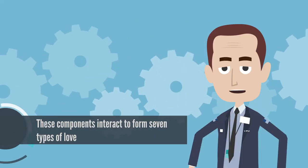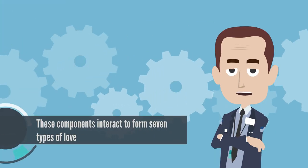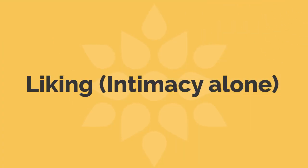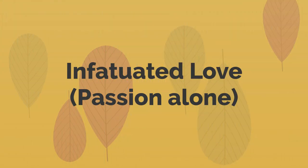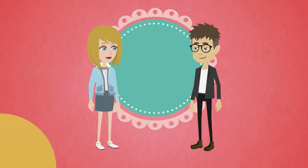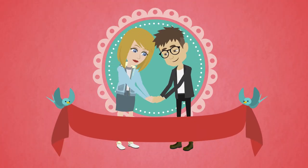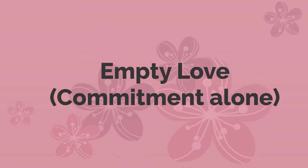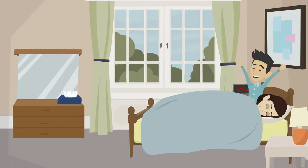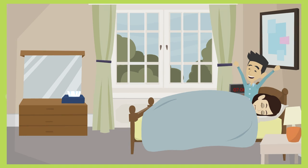These components interact to form seven types of love. Liking — intimacy alone — is characterised by friendship and true appreciation for another person without romantic passion or long-term commitment. Infatuated love — passion alone — is often what is felt as love at first sight. Empty love — commitment alone — occurs when a long-term relationship might only have commitment left.